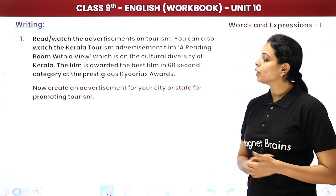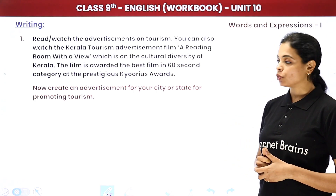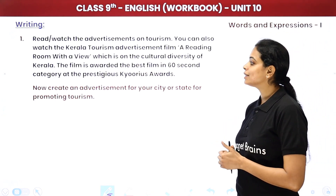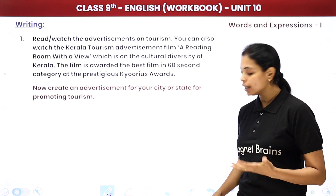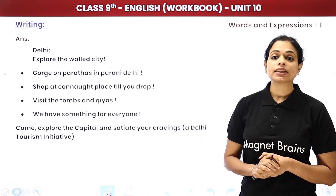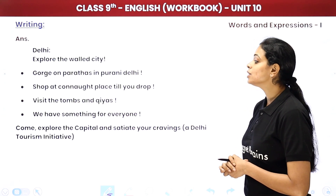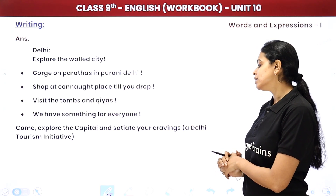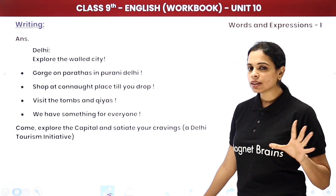For the writing section, create an advertisement for your city and state to promote tourism. Here is a sample: 'Delhi — Explore the Walled City. Gorge on parathas in Purani Delhi. Shop at Connaught Place till you drop. Visit the tombs and khiyas. We have something for everyone. Come, explore the capital and satiate your cravings. A Delhi Tourism Initiative.' You can include more things and design a background for this advertisement.